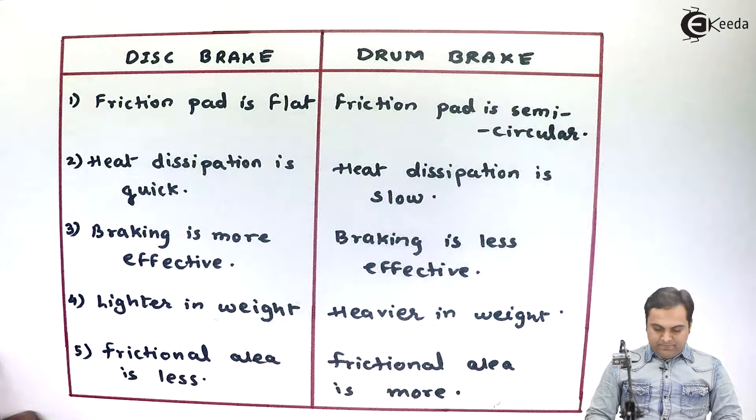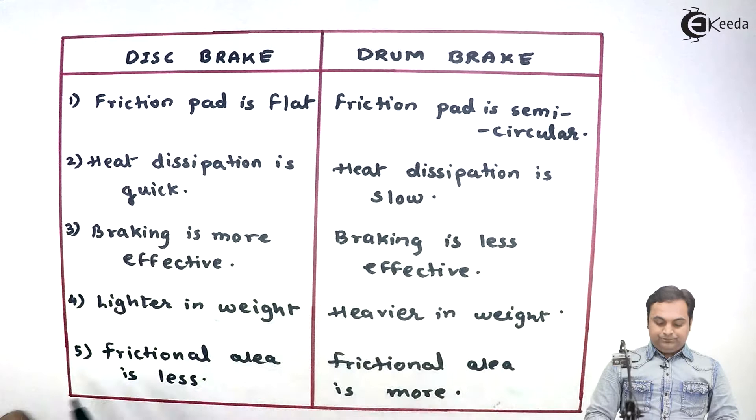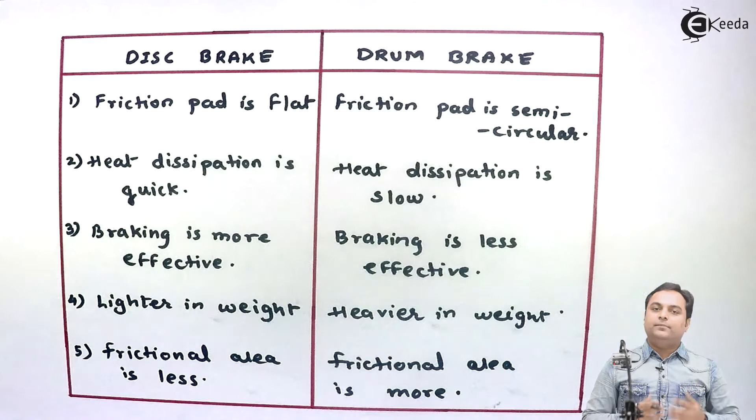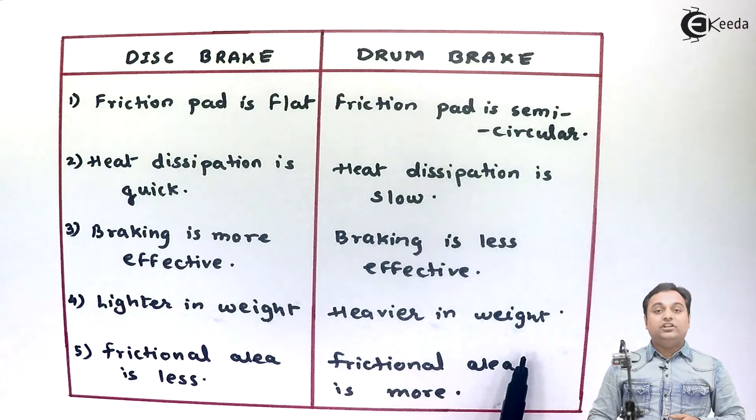In case of disc brake, braking is more effective and quick, whereas in drum brake braking is less effective. Disc brakes are lighter in weight with fewer parts, whereas drum brakes are heavier in weight.